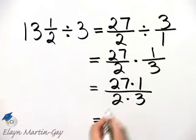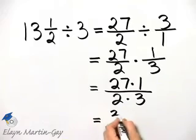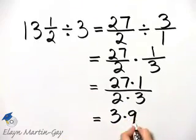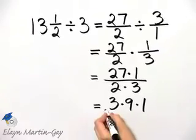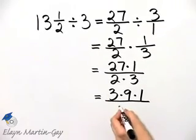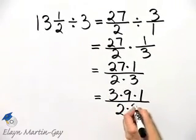So I'll write twenty-seven as three times nine, and if you want to include the one in the denominator, two times three.